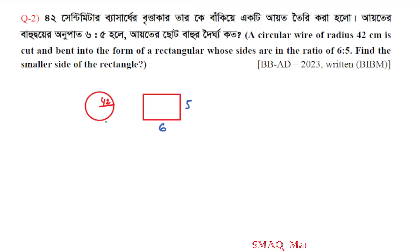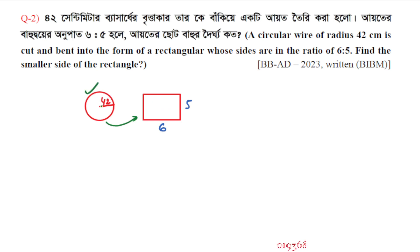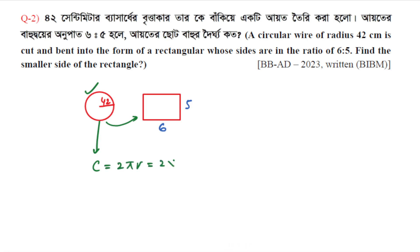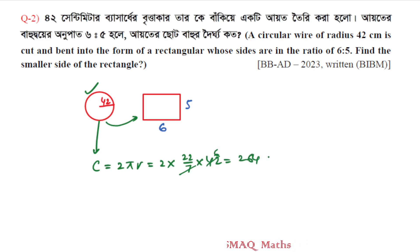The perimeter of the rectangle equals the circumference of the circle. Circumference equals 2πr, which is 2 × (22/7) × 42. Simplifying gives 264 cm. So the total perimeter of the rectangle is 264 cm.